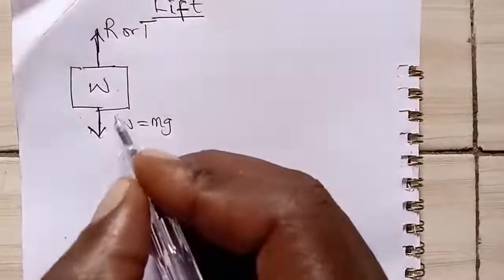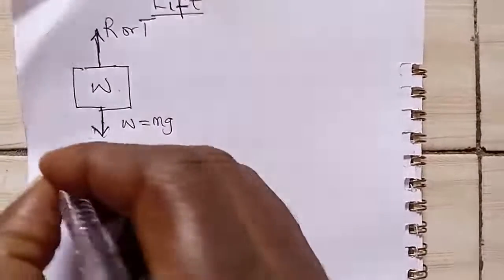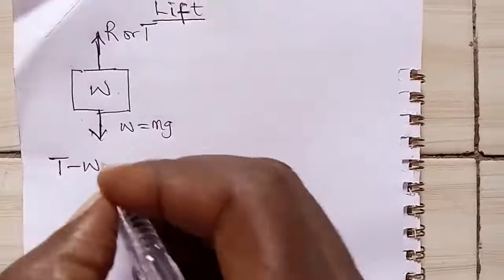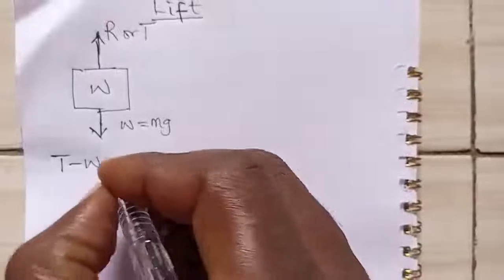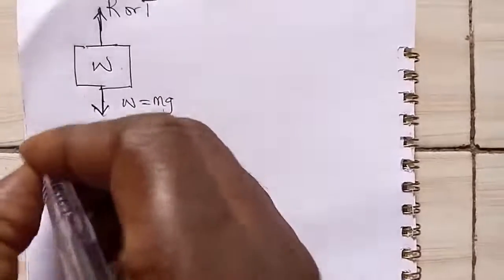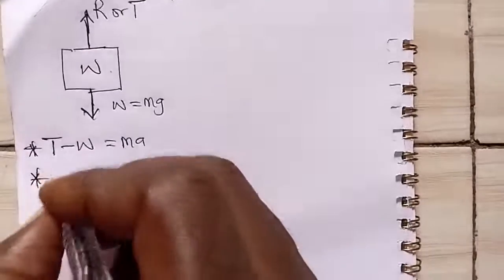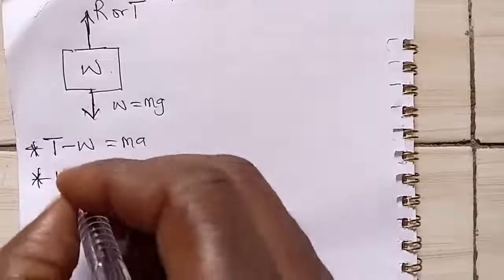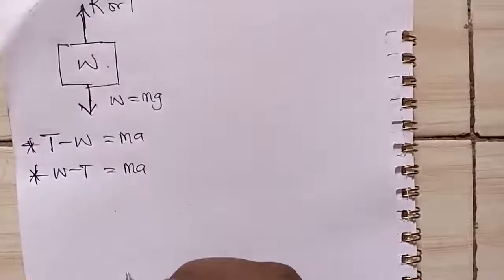The condition of the lift system, the first one is that when lift is going up, the tension will have to be greater than the weight so that it will go up. So T minus W gives us, it produces the force which is ma. The second condition is that when lift is going down, it means the weight will have to be greater than the tension, then that produces the force that's ma.